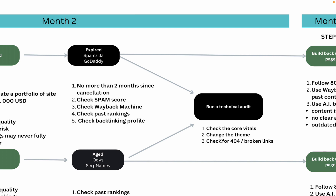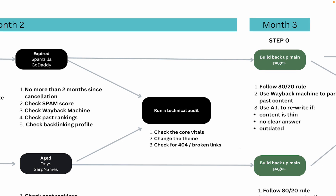Next, I run a technical audit. I only check for three things: core vitals — meaning the speed of the website and whether it's mobile friendly; often changing the theme, and on many of my websites I use the Popcorn theme, which is extremely fast, looks nice, and doesn't have excess code to slow it down; and I check for 404 errors and broken links. Tools like Ahrefs have a free webmaster tools suite so you can connect your domain and check those free of charge.